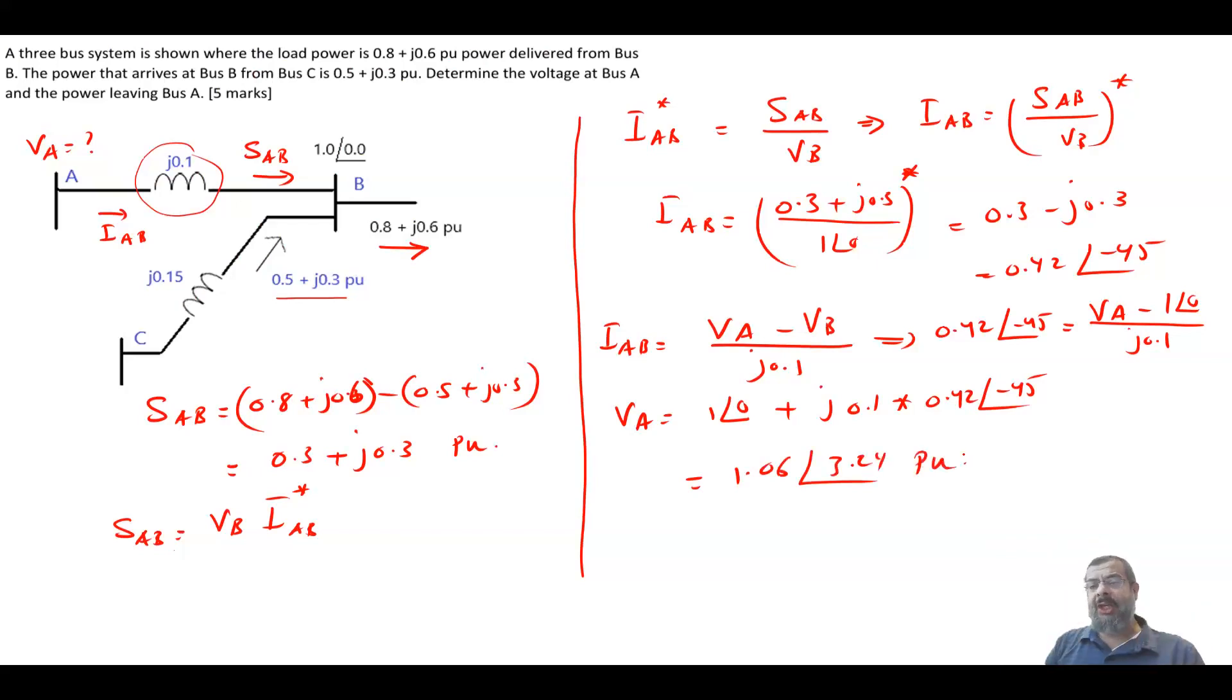Now, here, as a check, as a self-check for your answer, the VA magnitude is higher than the VB magnitude. And this is basically confirmed by that the reactive power, which is the 0.3, is going from A to B, because the reactive power goes from the higher voltage magnitude to the lower voltage magnitude. And also the angle of VA is higher than the angle of VB, which is also correct, because the real power goes from the higher angle to the lower angle. So VA has a higher angle than VB. This is where the power is flowing. This is just a qualitative sort of check.